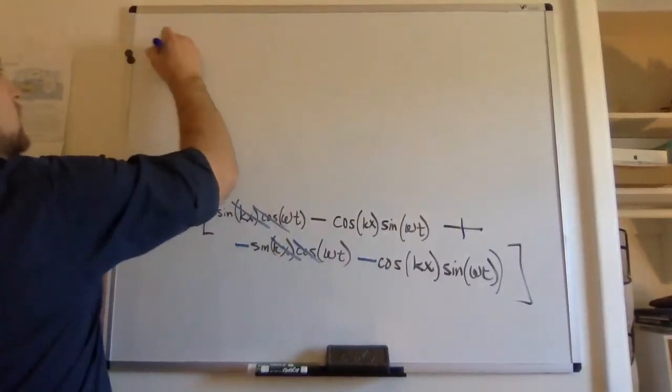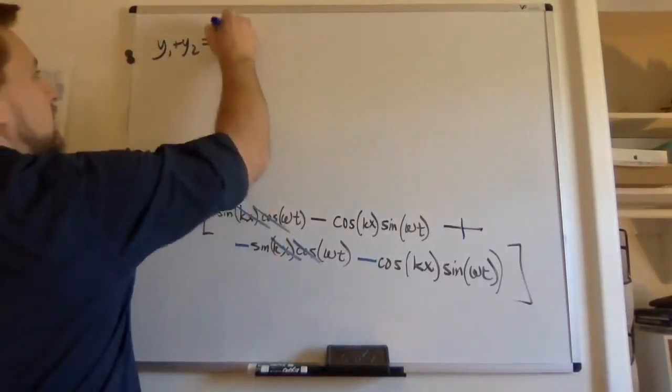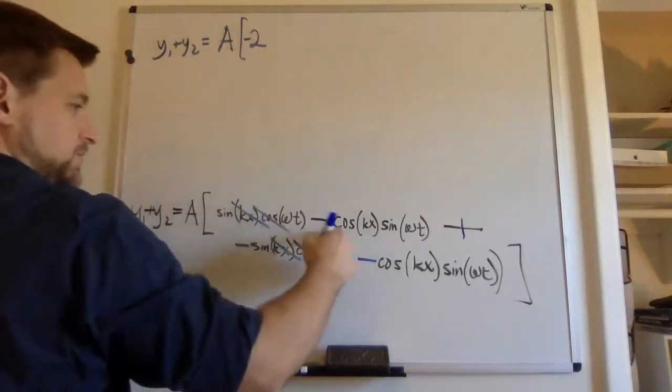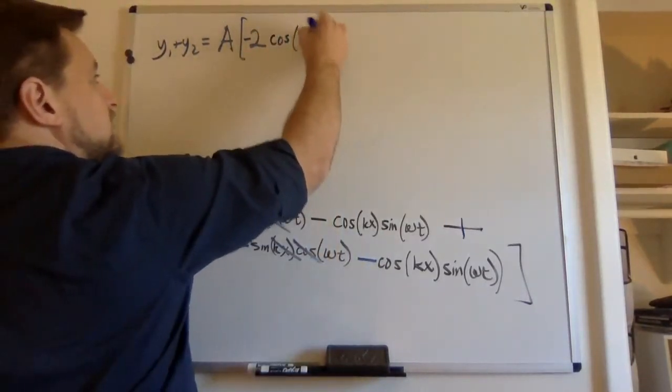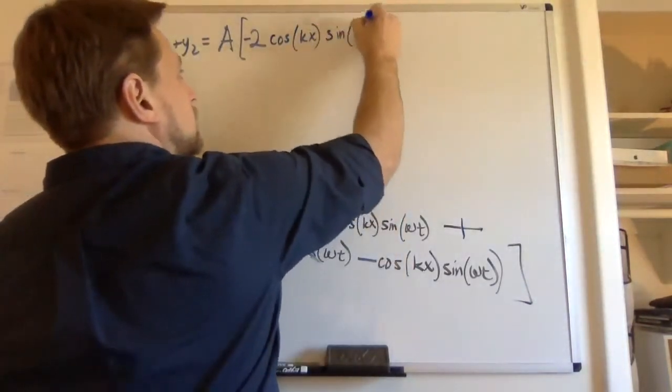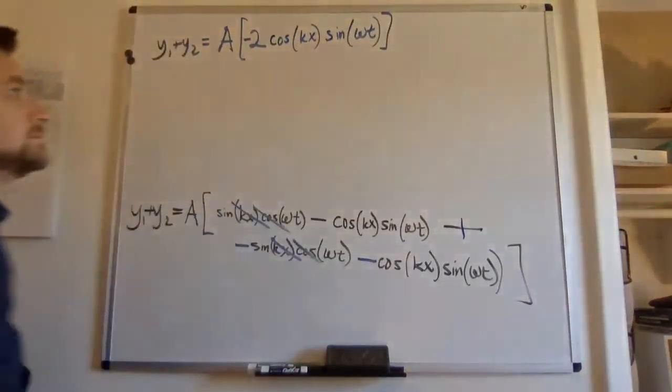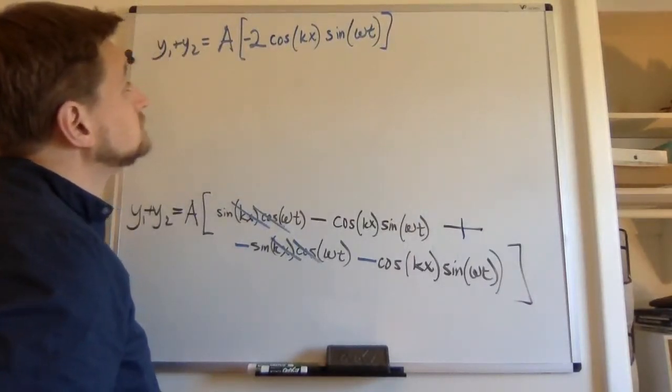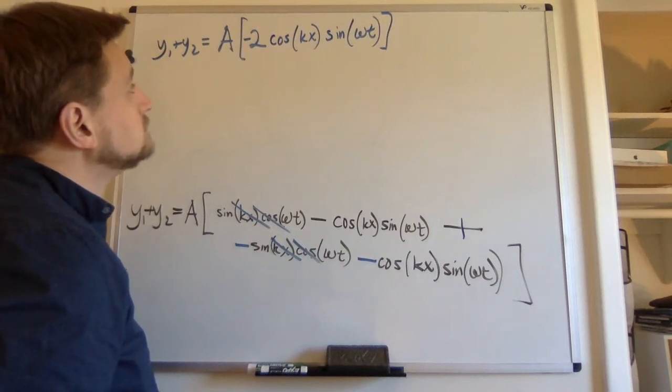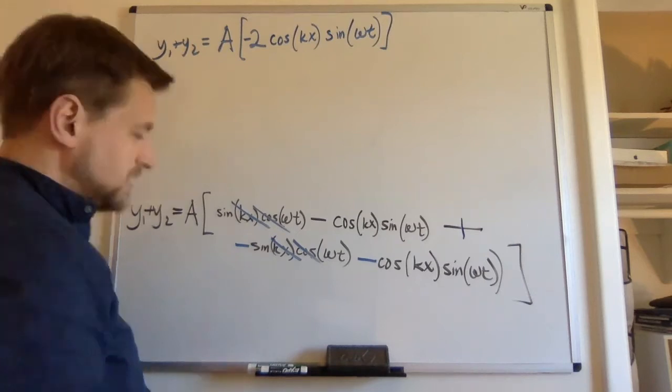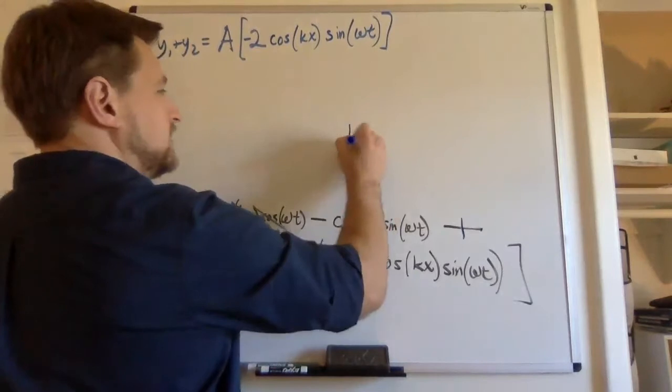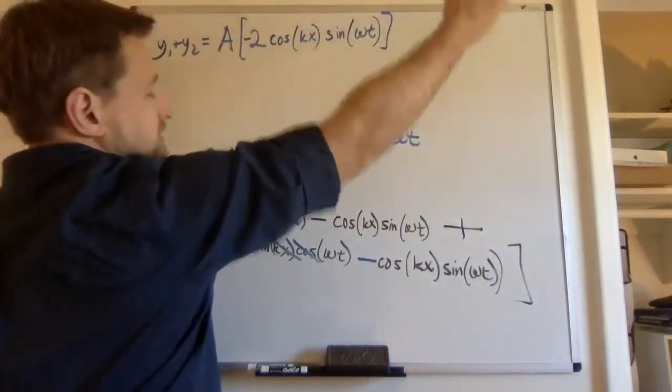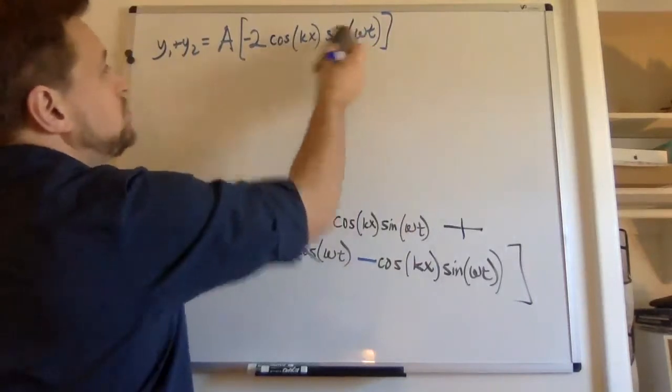Okay. So this is y1 plus y2 equals A. There's a minus sign here. So it's minus 2A cosine kx, sine ωt. There's no good way to put it back into kx minus ωt because we don't have sine cosine plus cosine sine or anything like that. So we're sort of stuck separated like that.